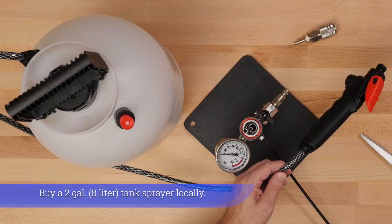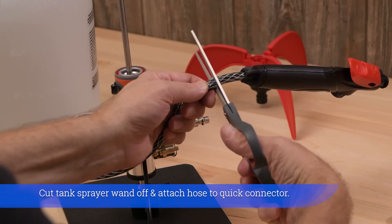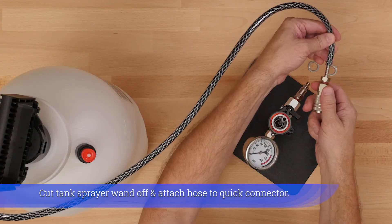Buy a two gallon tank sprayer locally. Cut tank sprayer wand off and attach hose to quick connector.